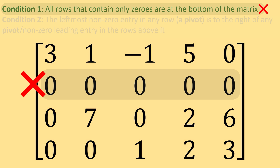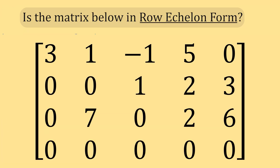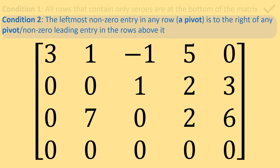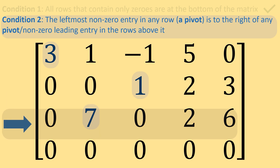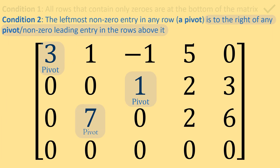What if we switch row 2 and row 4? We get this matrix. Is it in row echelon form? The rows that contain zeros are at the bottom, so we satisfy the first condition. What about the second condition? From left to right in each row, where are our first non-zero entries? We have a 3 in the top row, 1 in the second row, and 7 in the third row. As we move down from row to row, are these leading entries — which we call the pivots — to the right of every pivot above them?